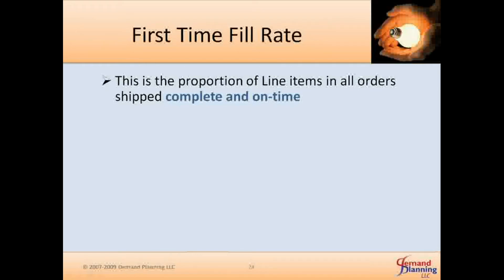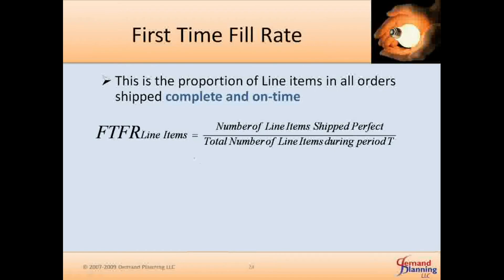First time fill rate is the proportion of line items in all orders shipped complete and on time. You just count the number of line items and measure how many line items you shipped complete. First time fill rate line items is the number of line items shipped perfect versus the total number of line items during a particular period — a month or a week, whenever you measure it. Quantity doesn't matter; the lines matter.